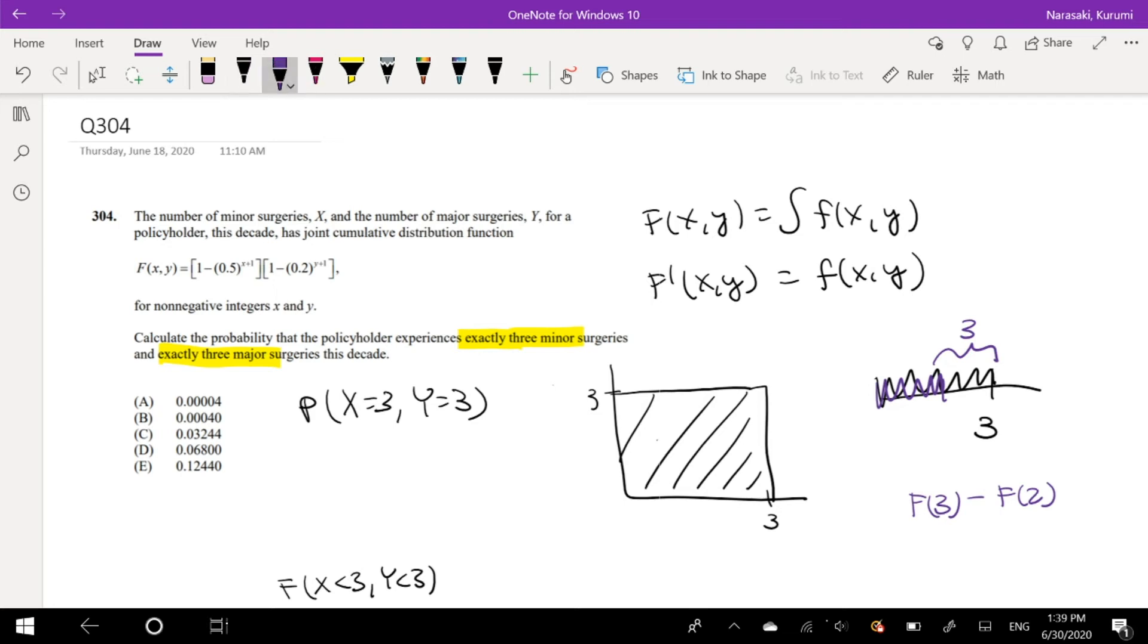So I'm going to take the 2 away. So I'm going to take this minus F(2,3), right? So then this whole area is gone. Minus F(3,2). So this area is gone.